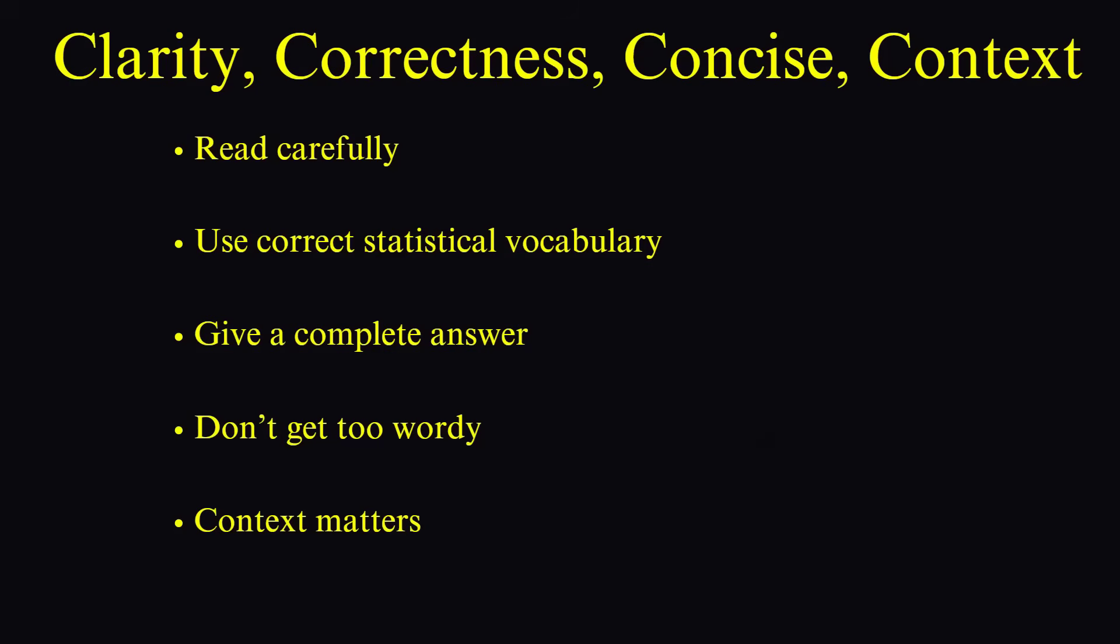First, read the question carefully. Make sure you're answering exactly what's asked. It's easy to miss small details, so take your time. Next, watch your vocabulary and symbols. Misusing terms like bias or confounding can hurt your score. It's better to explain things clearly than to rely on statistical jargon.